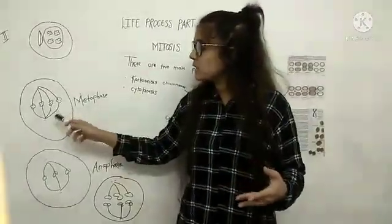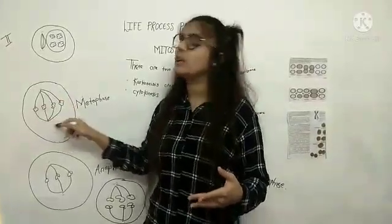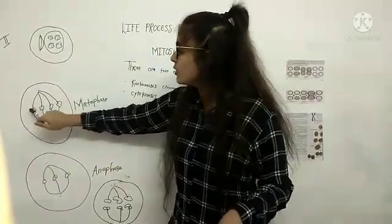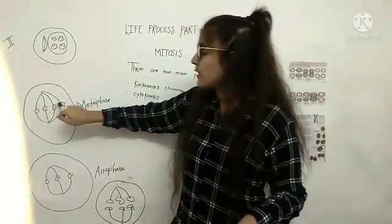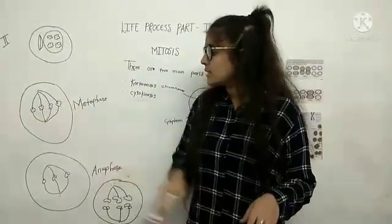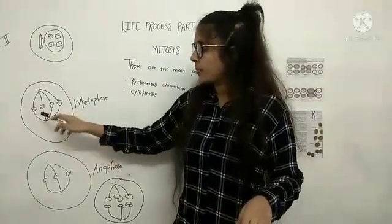In metaphase, the nuclear membrane and nucleus are completely disappeared. All the centromeres come at the center of the equatorial plane. In metaphase, this process stops here.